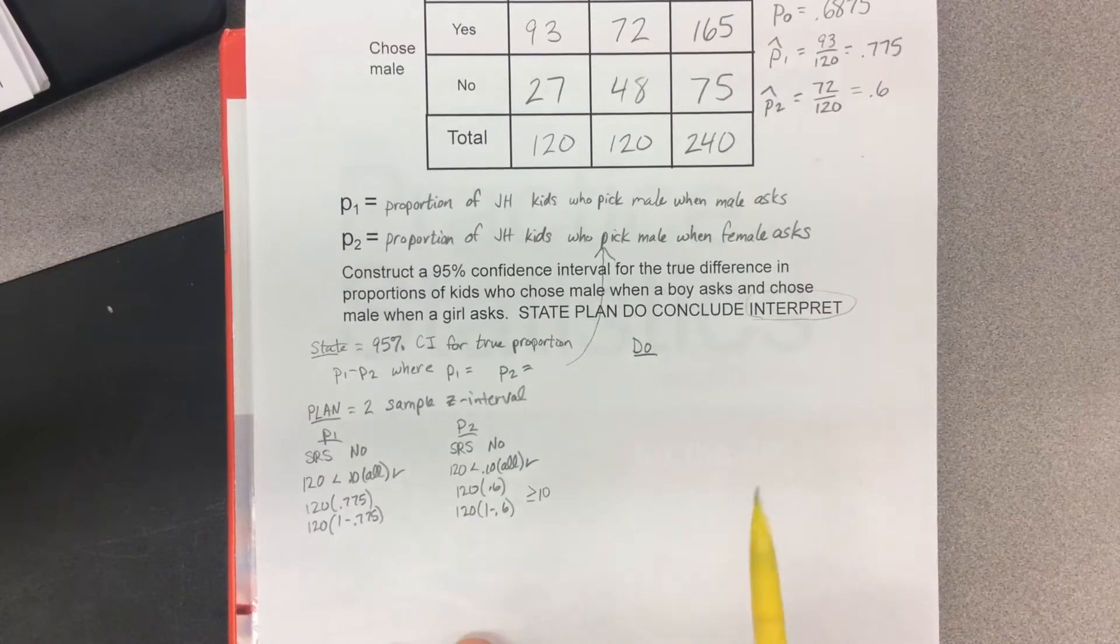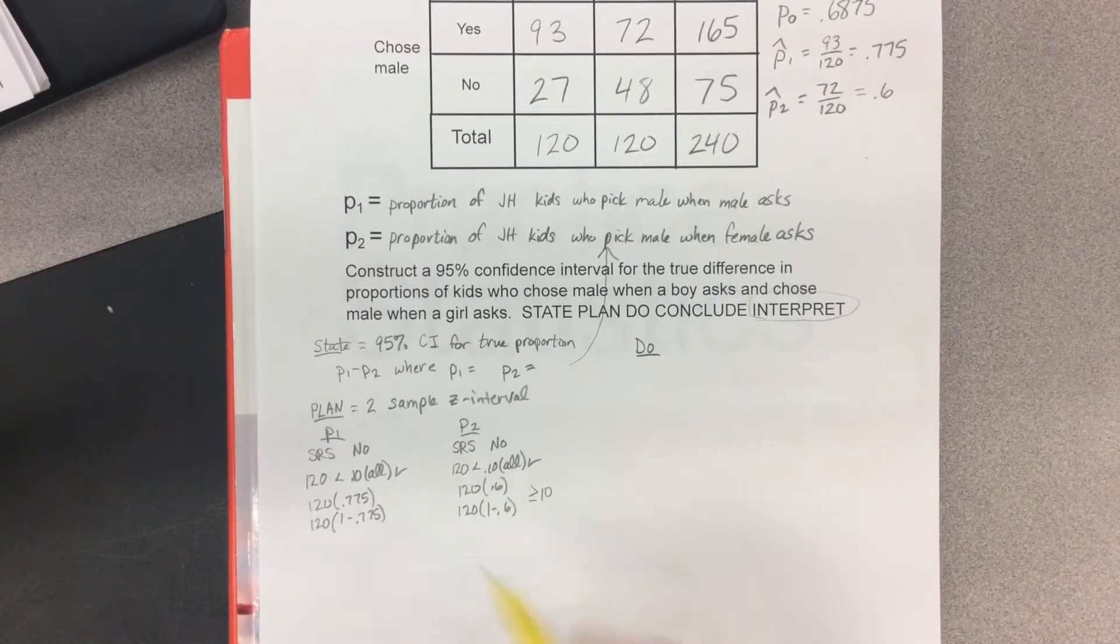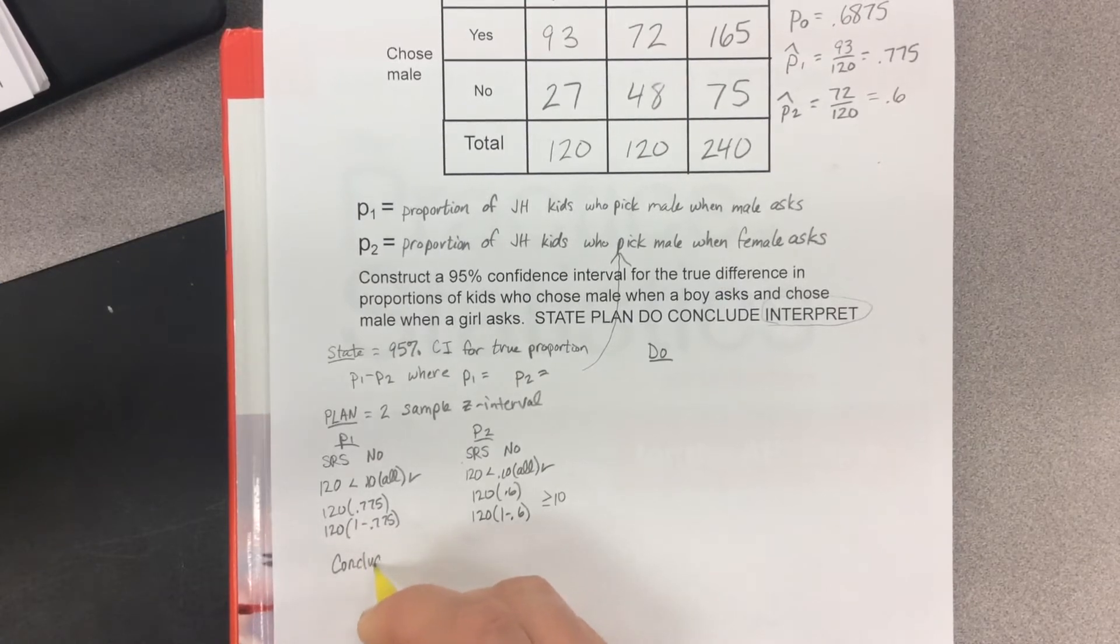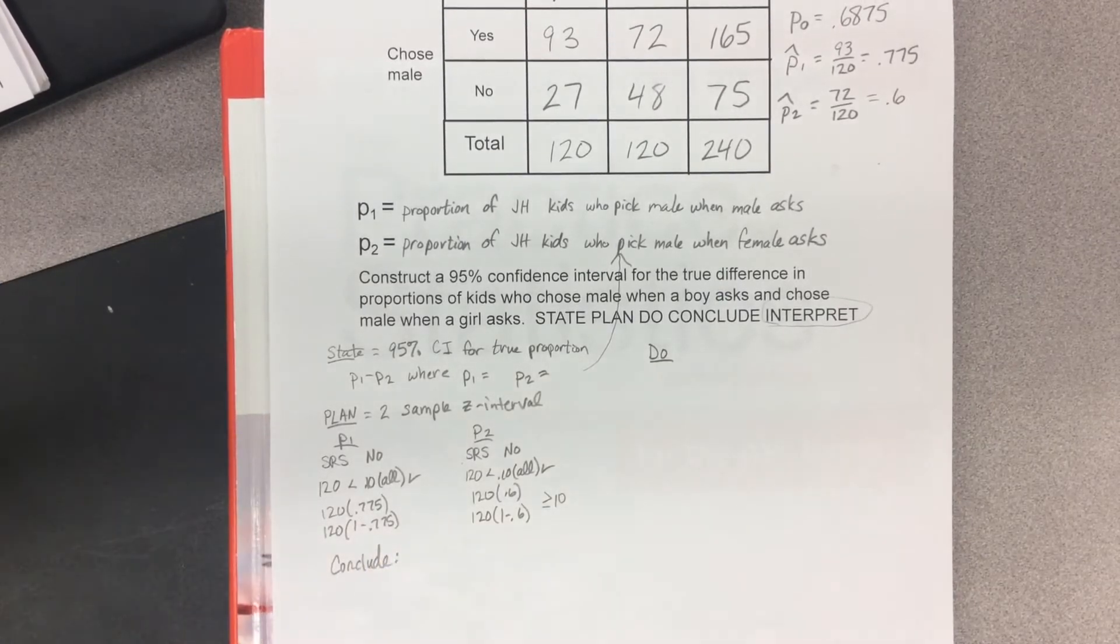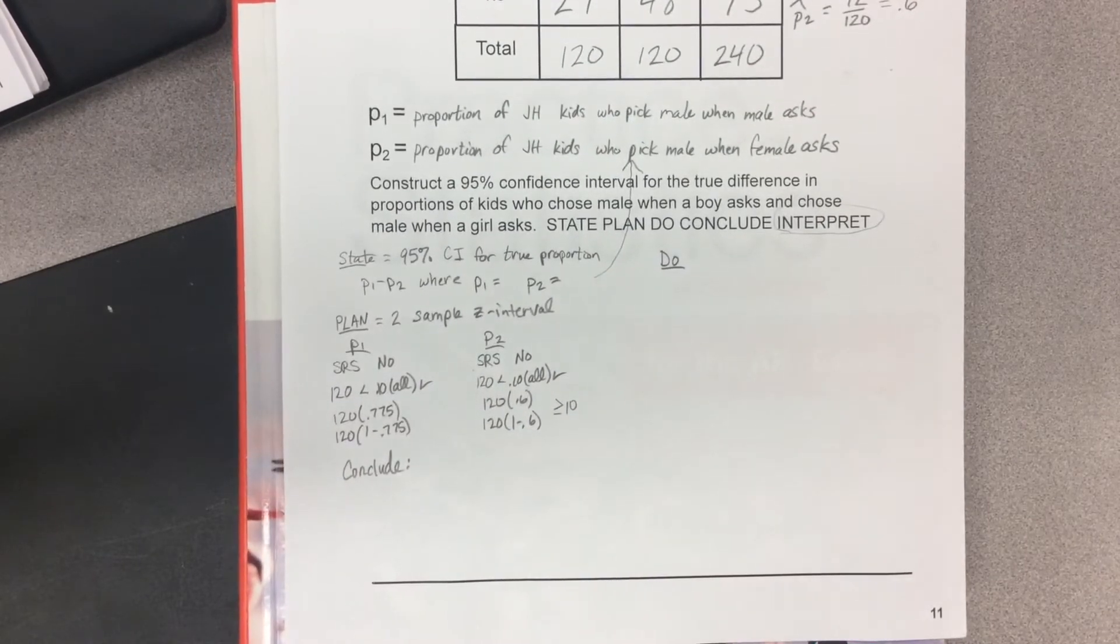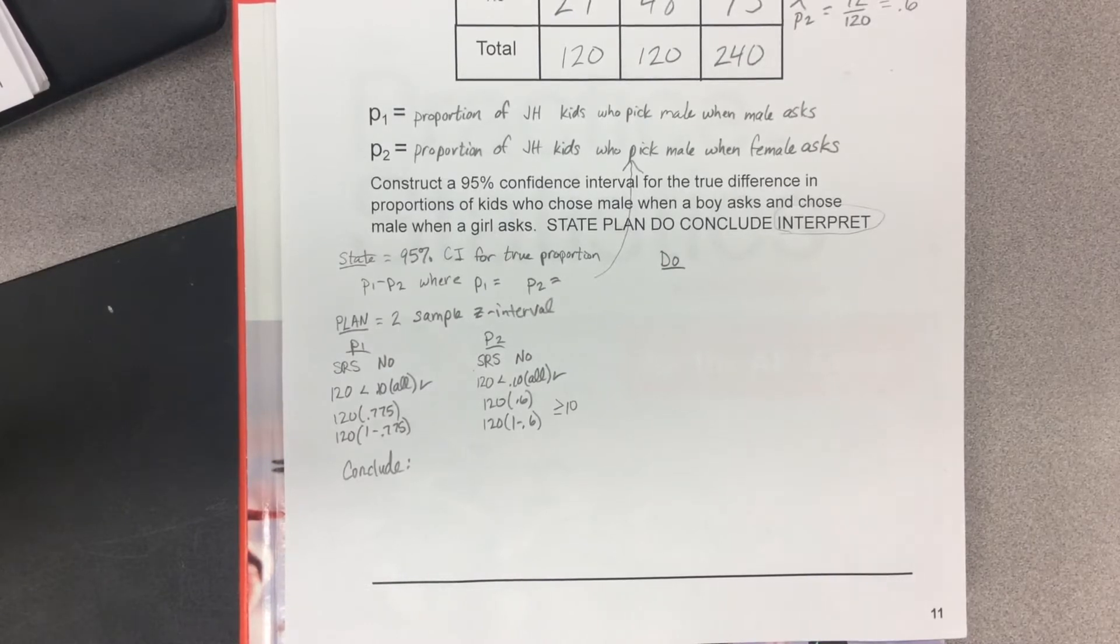Go find that, and then you're going to find a confidence interval. After you find the confidence interval, you're going to conclude. Your conclude statement should take the same form as every other statement. I am 95% confident the true difference in P1 minus P2 is blah, blah, blah. You can go ahead and do that.